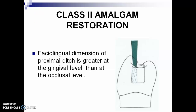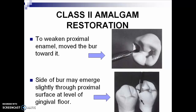The facial-lingual dimension of the proximal ditch is greater at the gingival level than at the occlusal level. That means it is slightly converging towards the occlusal. To weaken the proximal enamel, you just move the burr toward it. The side of the burr may emerge slightly through the proximal surface at the gingival floor — so if you make a mistake, the burr will have a hole on this area.